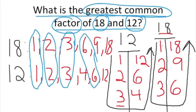Are there any other factors that they share? There's no 9 in the factors of 12, and no 18 either. So the common factors that both 18 and 12 share are 1, 2, 3, and 6. But we need to find the greatest, which means the biggest common factor. Out of 1, 2, 3, and 6, the greatest is 6.